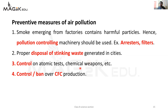Control on atomic tests and chemical weapons - hum log electricity production mein aur atomic weapons banane mein har country bahut tezi se badhna chahti hai, aur humein is par control rakhna zaroori hai taaki air pollution control mein rahe. Last - control and ban over CFC production. CFC yaani chloro-fluorocarbon ka production pe control ya ban rakhna zaroori hai. Ab yeh CFC kahan se aata hai - yeh hamaare refrigerator, air conditioners AC, aur jo hum log use karte hain deodorants - unme hota hai.